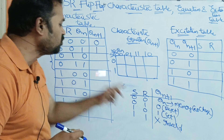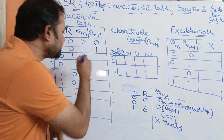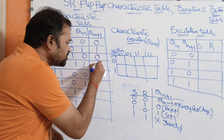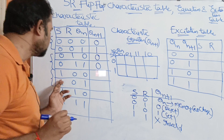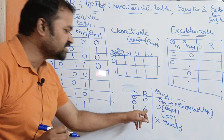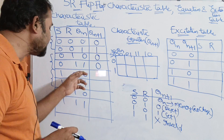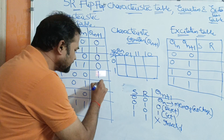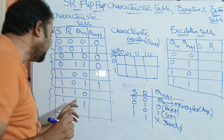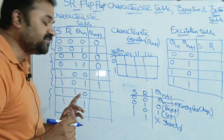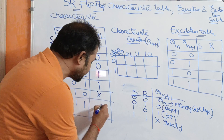For S=0, R=1 — the next two combinations — the output is reset, so 0, irrespective of the current state output. For S=1, R=0 — the next two combinations — the output is set, so 1, irrespective of the current state output. For S=1, R=1, the output is don't care — it may be either 0 or 1. This is about the characteristic table.